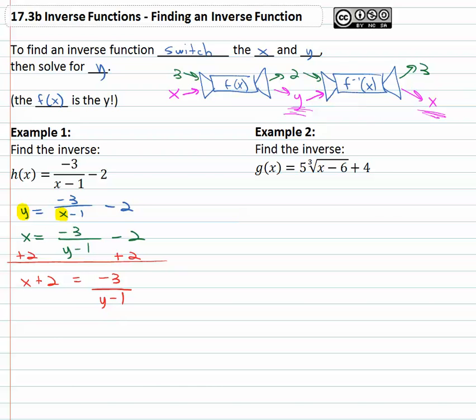We know we can clear the denominator, get rid of the fraction by multiplying both sides by y minus 1, the denominator. Denominators divide out on the right side, so we have x plus 2 times y minus 1 equals negative 3.